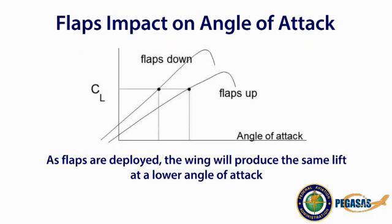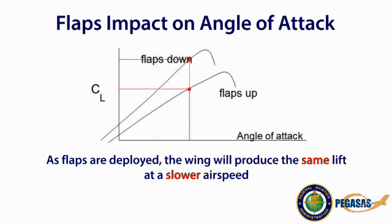Here is a graph of the coefficient of lift with flaps up and flaps down. Flaps allow us to maintain the same coefficient of lift at a lower angle of attack, which allows for variations in descent profiles. Or, flaps allow us to achieve a greater coefficient of lift for the same angle of attack, which provides for a reduction in approach speeds while maintaining the same amount of lift. Regardless of how a pilot utilizes flaps during an approach, it is important to determine if the angle of attack system being used is calibrated in multiple wing and flap configurations or in a single configuration.